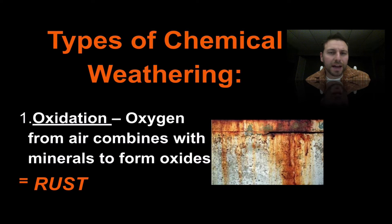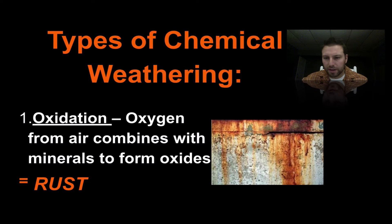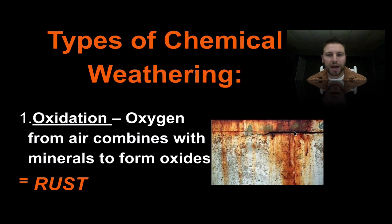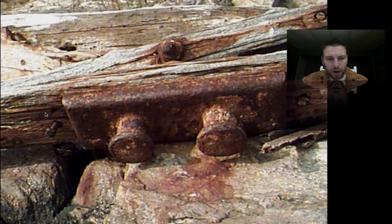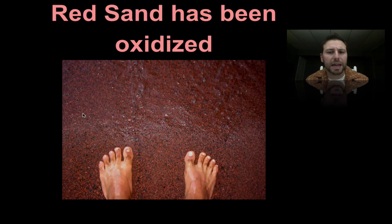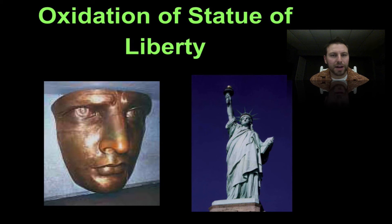One type of chemical weathering we see pretty often is oxidation — where oxygen from the air combines with minerals to form oxides, also known as rust. You can see evidence of it on cars, or any metal around your house exposed to the elements. Here we can see a cleat from a boat that has been oxidizing, and even these nuts, bolts, and nails are oxidizing. Red sand has been oxidized — there's an iron content in some of that sand, and as it's exposed to oxygen it turns this red color. The Statue of Liberty is made of copper — about the thickness of two pennies — and it turns this nice green color as it oxidizes.